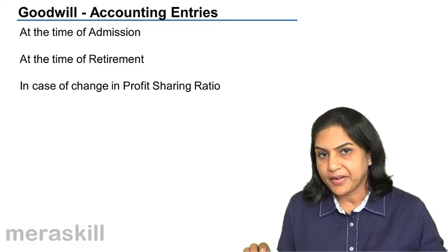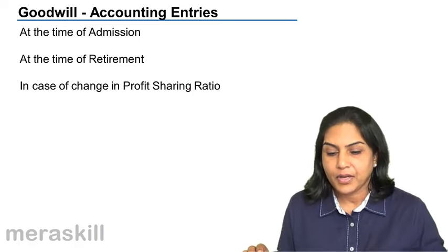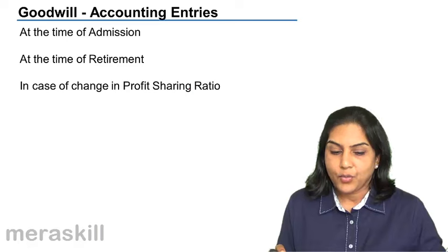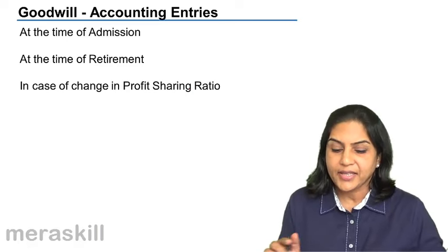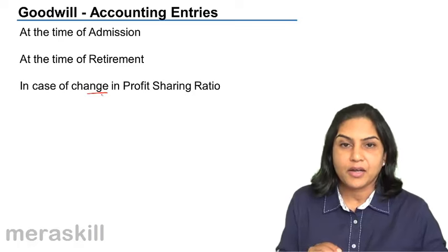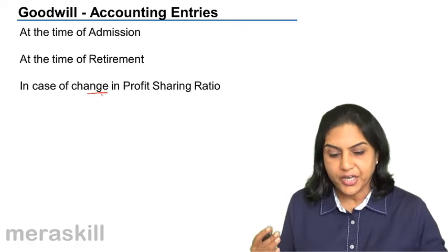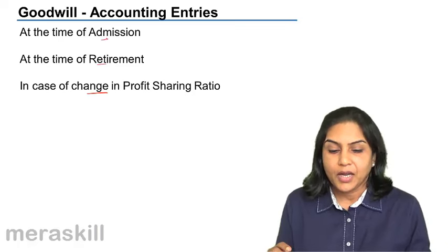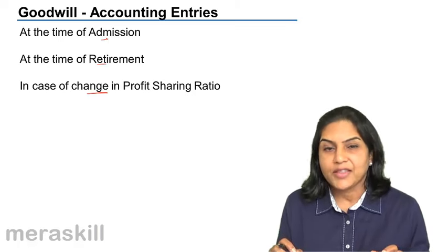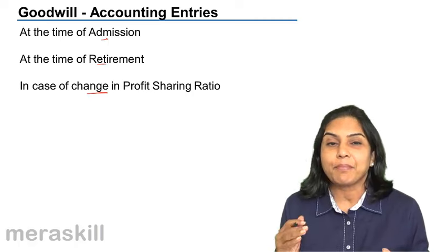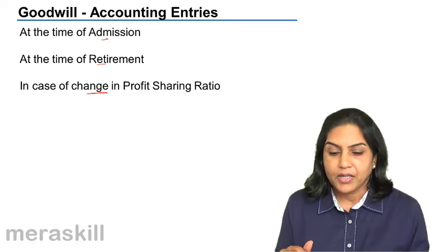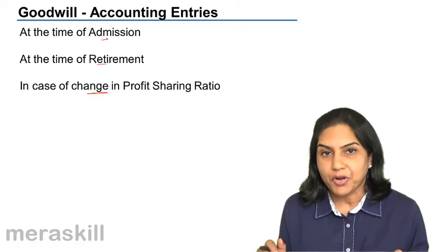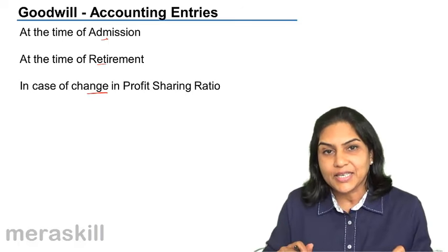Accounting entries are simple and logical. Whenever the profit sharing ratio changes — either because we are reconstituting the ratio, because of retirement, or because of admission — when the profit sharing ratio changes, there is some partner who stands to gain and some partner who stands to lose. The partner who stands to lose will lose his share in the future profits and therefore he is being compensated today.